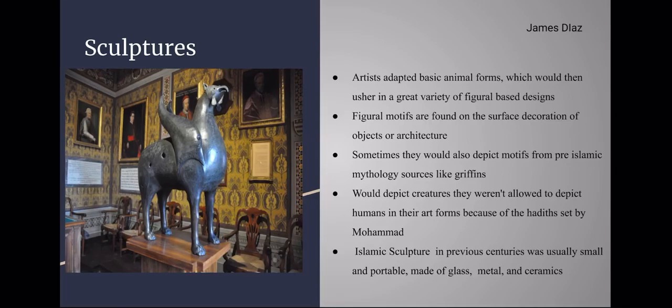These sculptures were made from glass, metal, and ceramic material. They would often depict motifs that would allude to pre-Islamic mythology. One of the most notable pieces was a griffin made from bronze, known as the Pisa Griffin, created in 11th-century Spain.